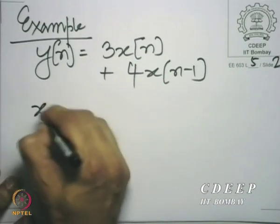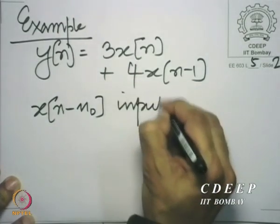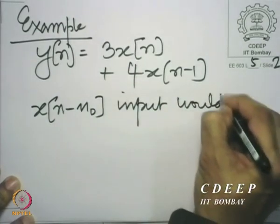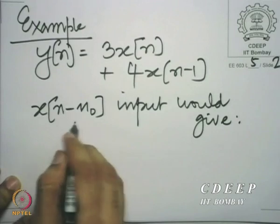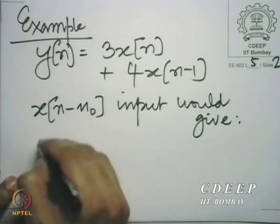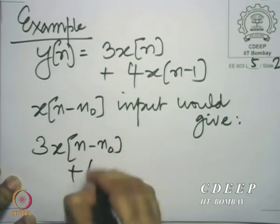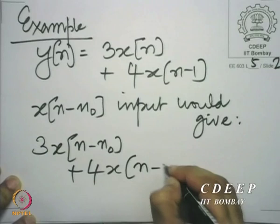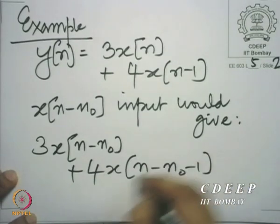If I were to put x[n−n0] into the system, I would get the output by replacing n by n−n0 in both places. So the output would be 3·x[n−n0] plus 4·x[n−n0−1], and it is easy to say that this equals y[n−n0].